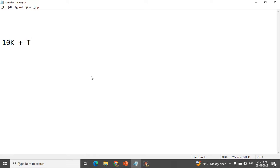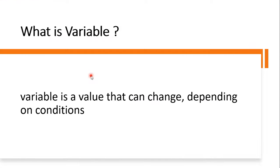The same concept applies to our technology variable — it also changes depending on the condition and the situation, depending on how developers have developed the bot. I hope you understood with this scenario what a variable is. If not, please comment on the video and I will try to give more examples.